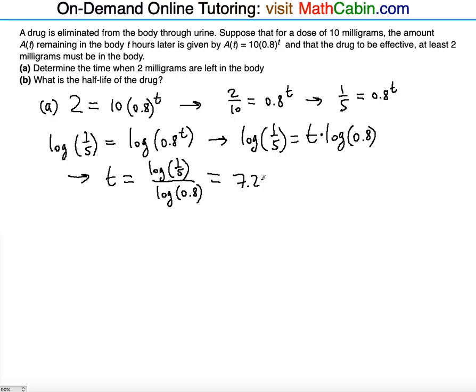So it's going to be 7.212567439, which to two decimal places to the nearest hundredth is going to be 7.21. And what is the units for T? The T is hours. So that's going to be hours.